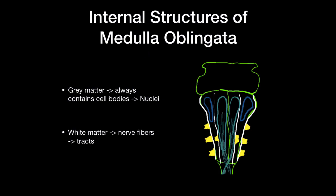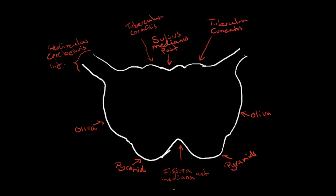Now let's talk about the internal structures of the medulla oblongata. Gray matter always contains cell bodies, so whenever we talk about gray matter you'll have nuclei — every structure in gray matter is going to have nuclei. White matter, on the other hand, always contains nerve fibers, so white matter will have tracts. If we cut the medulla oblongata right about here, we can see the cross section. For orientation, here we see the fissura mediana anterior, lateral to it the pyramids, then the oliva, and on the posterior side the sulcus medianus posterior, tuberculum gracilis, tuberculum cuneatus, and the pedunculus cerebellaris inferior connecting with the cerebellum.